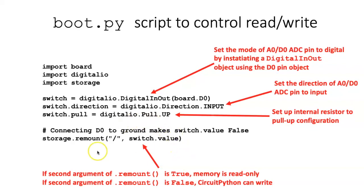If it's at 3 volts, then switch.value is going to return true. And in that case, this storage.remount command sets it to read only.